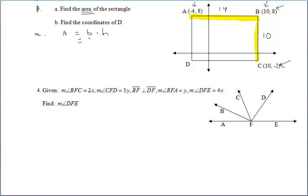We could find the area of our rectangle by doing base times height. And now since we know our dimensions, we could do 14 times 10, which leaves us with 140 units squared.